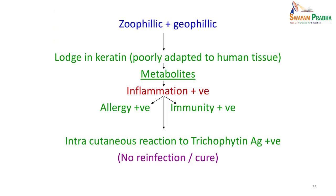In contrast, zoophilic and geophilic species are poorly adapted to human tissue. Their metabolites produce inflammation because the human body does not recognize them as its own, resulting in hypersensitivity reactions. An intradermal trichophytin antigen test will be positive in these cases. Since the body builds immunity against these species, reinfection is less common and patients tend to get cured faster.